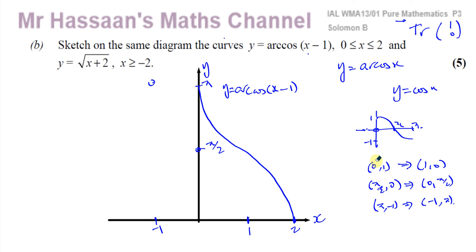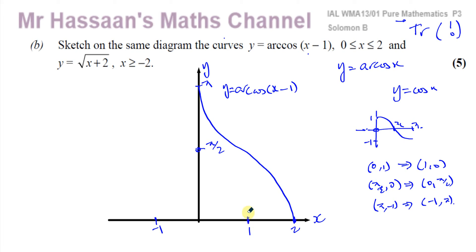In summary, I first drew y equals arc cosine x by thinking about the original cosine curve, then swapped the x and y values, restricting between 0 and π. In an exam situation, you should know the arc cosine curve goes through (1, 0), (0, π/2), and (-1, π), and you can draw it straight away. Then you think about it being shifted one space to the right because x minus 1 is inside the function.